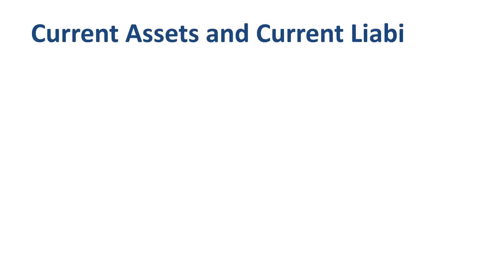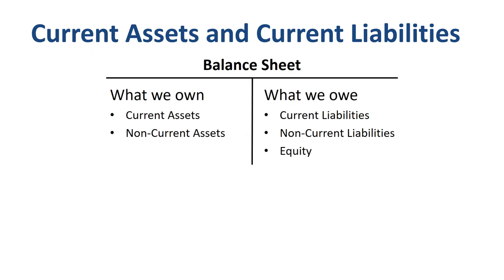To calculate and interpret the current ratio, we first need to understand its components: current assets and current liabilities. Current assets and current liabilities are both groups of accounts on the balance sheet. A balance sheet is a picture at a point in time — usually the end of the year or end of the quarter — of what a company owns on the left and what a company owes on the right. Asset accounts are grouped into current assets or non-current assets, and liability accounts into current liabilities or non-current liabilities.